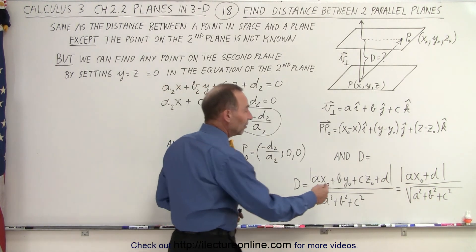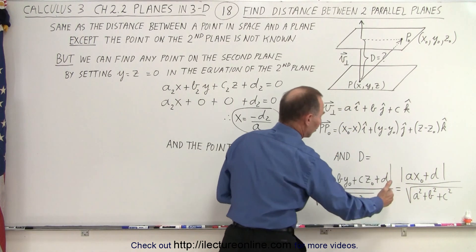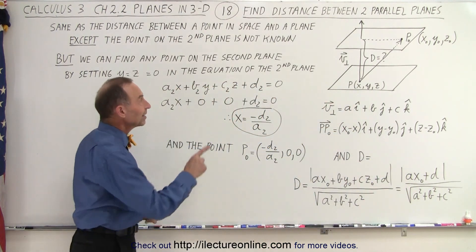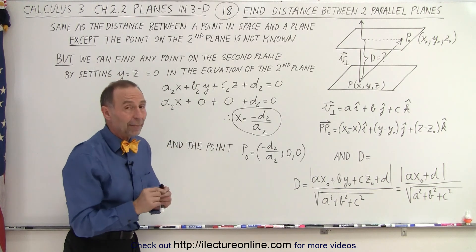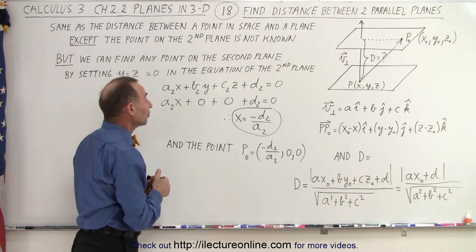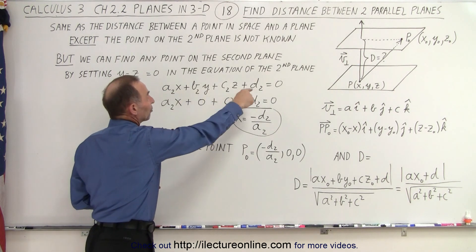And so that means that in this case, this will become a very simple exercise. But again, the general equation will be the same. We just need to find that point in space, which happens to be on that second plane, by setting two of the three variables equal to zero in the equation of that second plane.